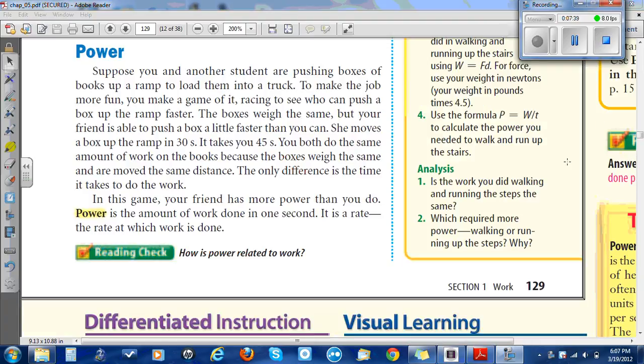Power. Suppose you and another student are pushing boxes of books up the ramp to load them into a truck. To make the job more fun, you make a game of it, racing to see who can push a box up the ramp faster. The boxes weigh the same, but your friend is able to push a box a little faster than you can. She moves a box up the ramp in 30 seconds, takes you 45 seconds. You both do the same amount of work on the books because the boxes weigh the same and are moved the same distance. The only difference is the time it takes to do the work. In this game, your friend has more power than you do. Power is the amount of work done in one second. It is a rate, the rate at which work is done.